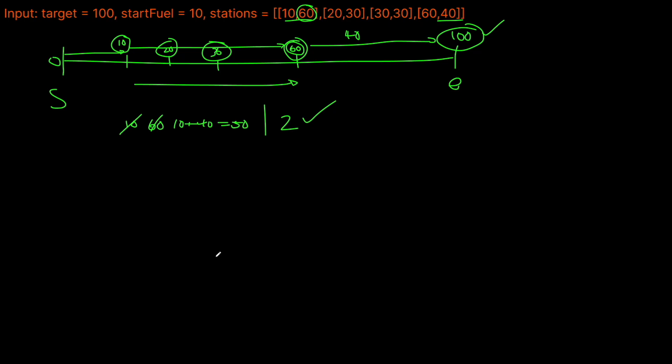The data structure we're going to use here is a heap. The reason we use a heap is so we have access in constant time to the largest gas station in terms of liters of fuel that it has, so we can take it greedily. So we want to build a max heap.